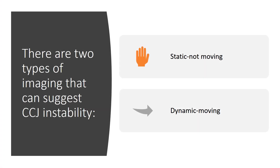There are two types of imaging that can suggest CCJ instability. One is static, or not moving, imaging, and the other is dynamic. In the case of upright MRI, that's generally a combination of static and dynamic.